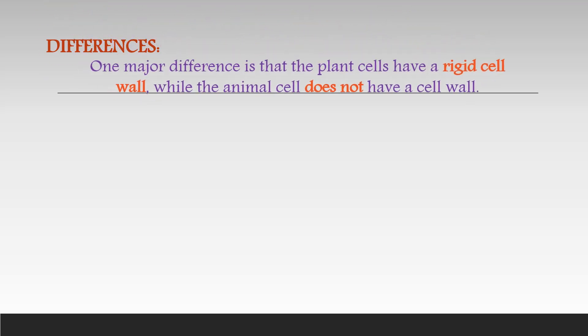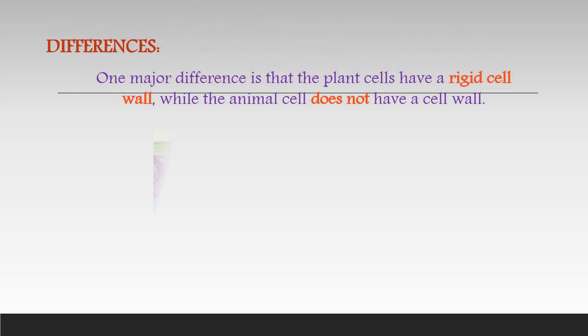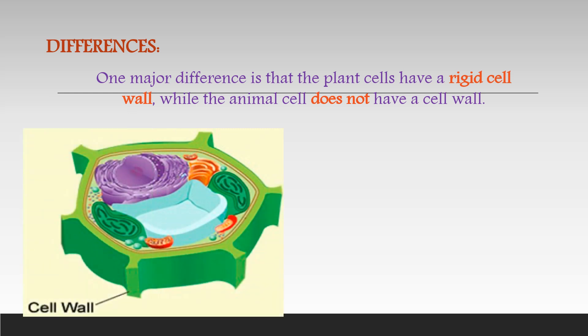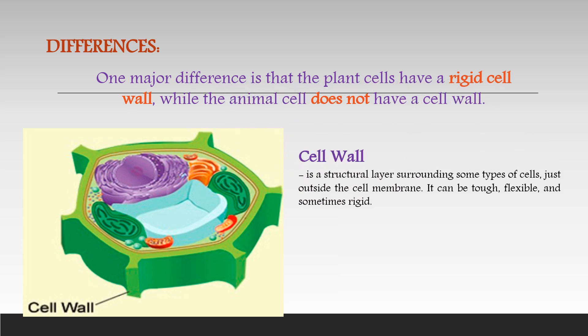One major difference is that plant cells have a rigid cell wall, while animal cells do not have a cell wall. The cell wall is a structural layer surrounding some types of cells, just outside the cell membrane. It can be tough, flexible, and sometimes rigid. It is composed of cellulose, providing additional stability and protection.